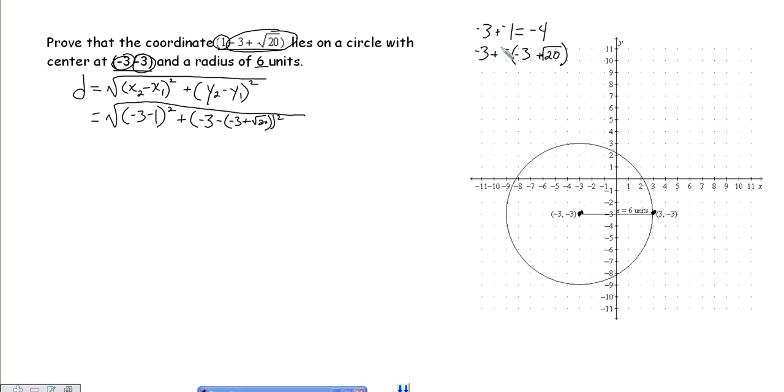And when we look at this negative in front of the parentheses, that's just like multiplying by negative 1 through the parentheses. Using the distributive property, we have negative 3 plus negative 1 times negative 3 is positive 3, and negative 1 times the square root of 20 is negative the square root of 20.